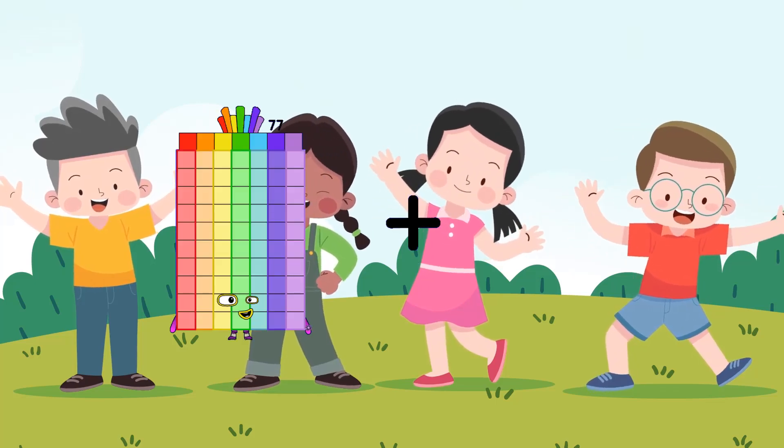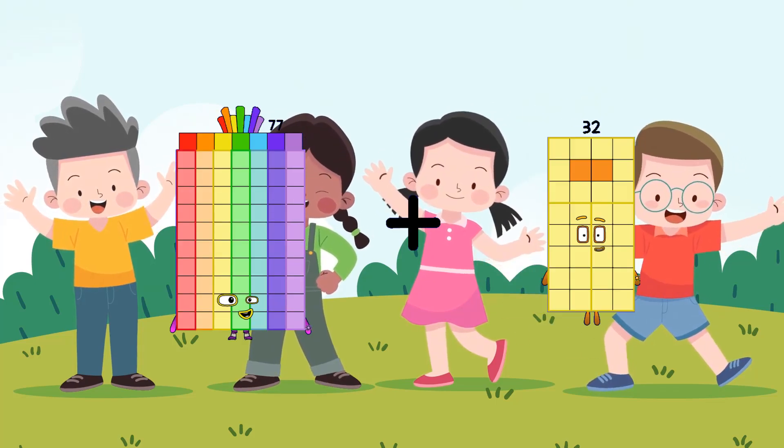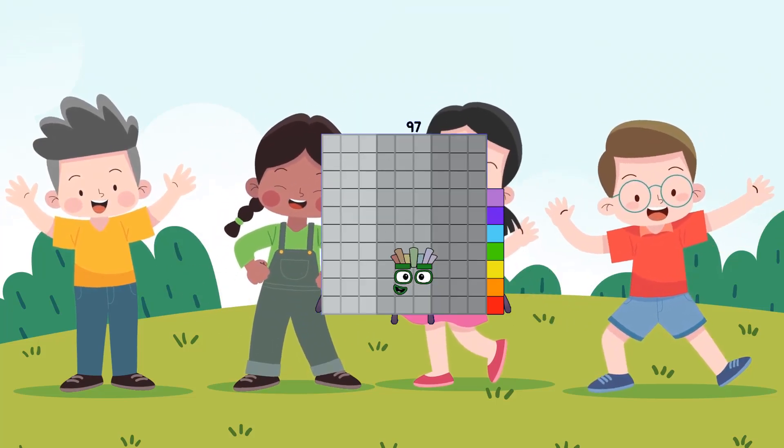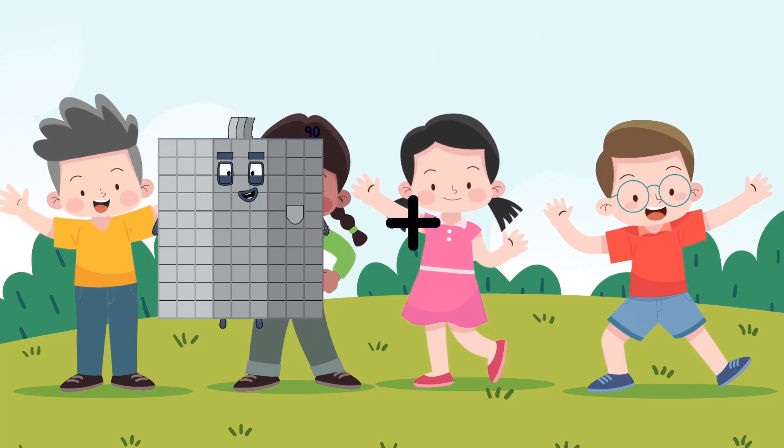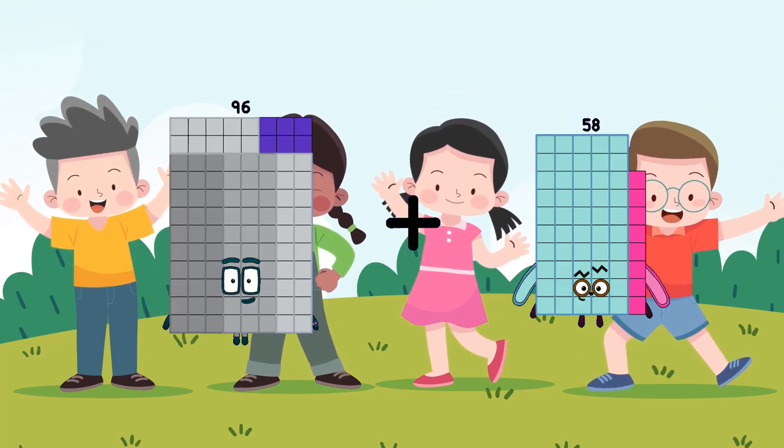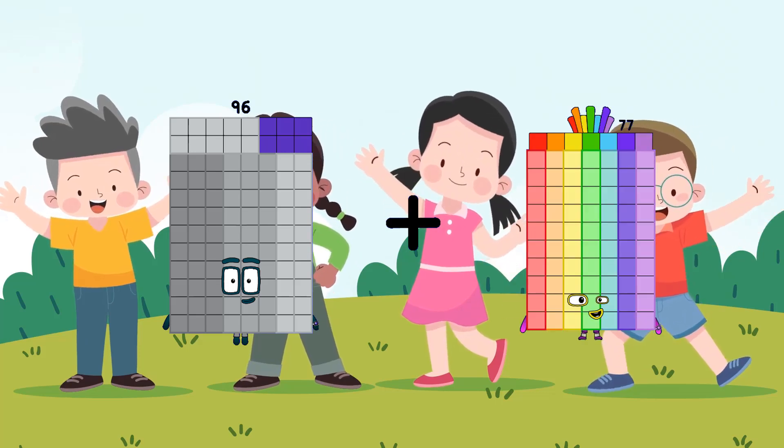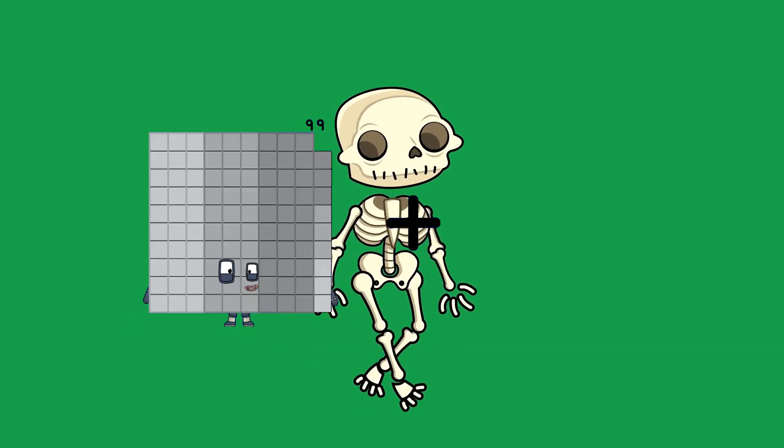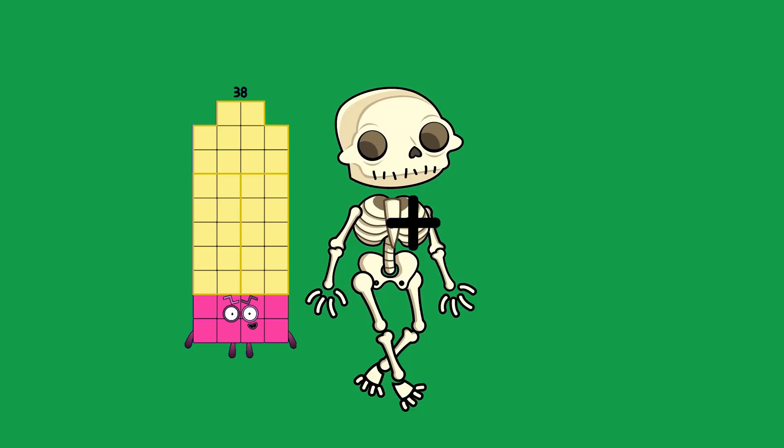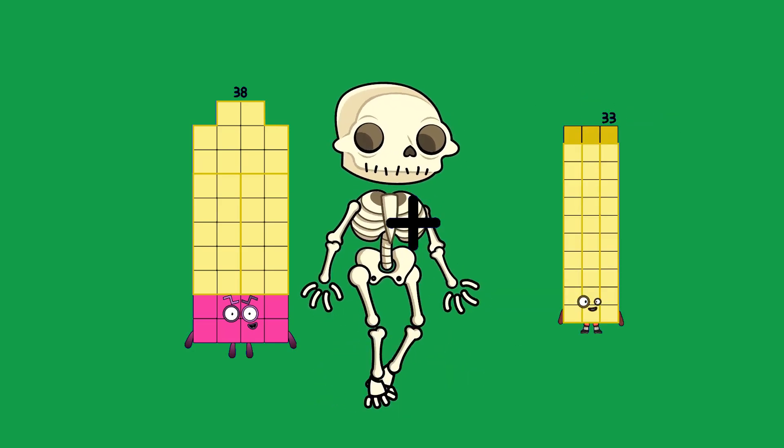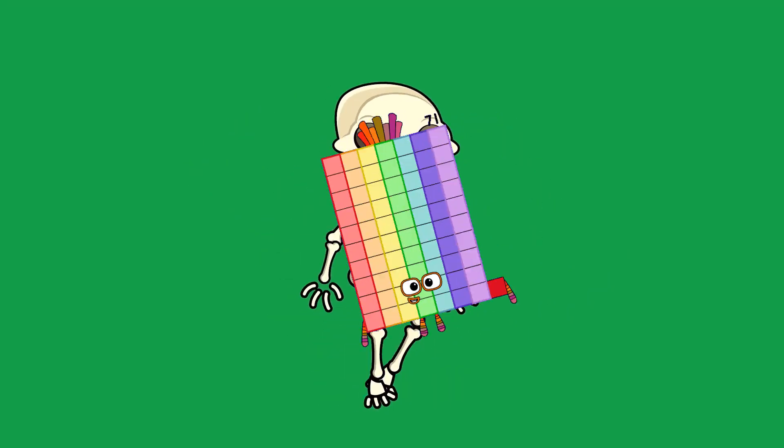77 plus 20 equals 97. 96 plus 77 equals 173. 38 plus 33 equals 71.